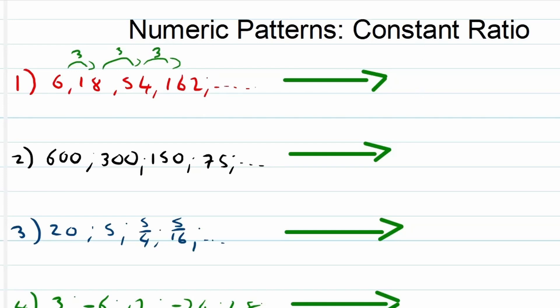That means our constant ratio for example 1 will be equal to 3. Another way to look at this is to say, okay, 18 divided by 6 is equal to 3, 54 divided by 18 is equal to 3, 162 divided by 54 is equal to 3.